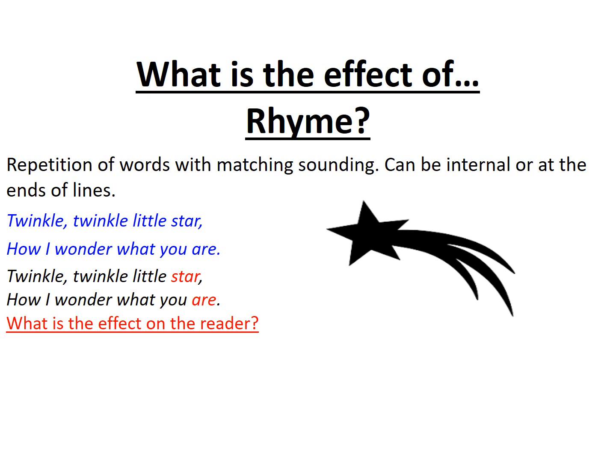At the end of each line, 'star' and 'are' rhyme, reinforcing the ideas that connect the words with a matching sound. The speaker is pondering the magnificent nature of the star, so 'star' and 'are' is about curiosity and fascination. It also drives the rhythm of the whole sound of those two lines and pushes us to hear the number of beats in each line.